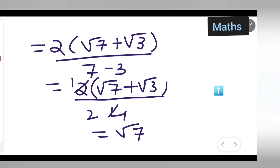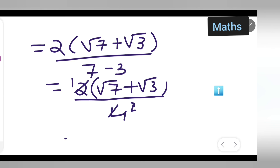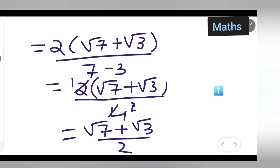After cancelling the 2 with the 4, you get root 7 plus root 3 upon 2 as the final answer. I hope you have understood how to rationalize the following denominator. Thanks for watching.